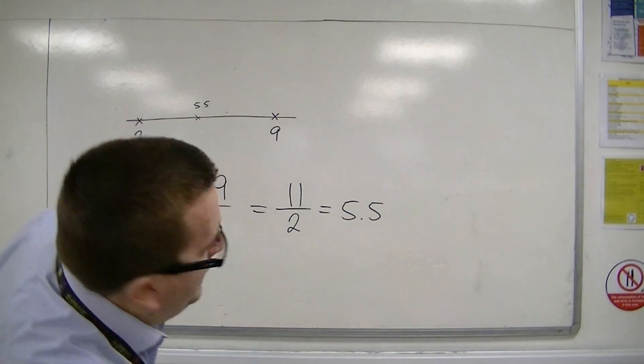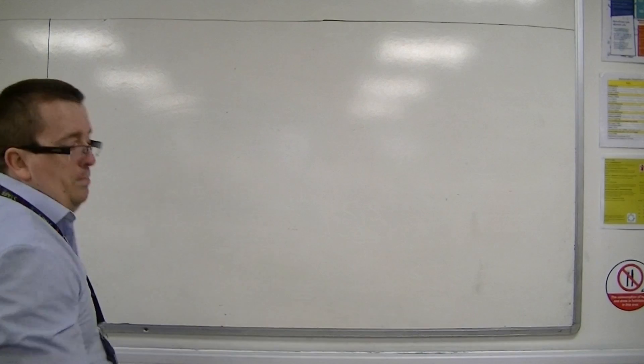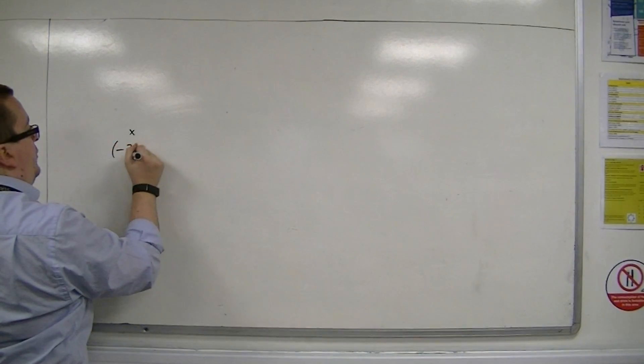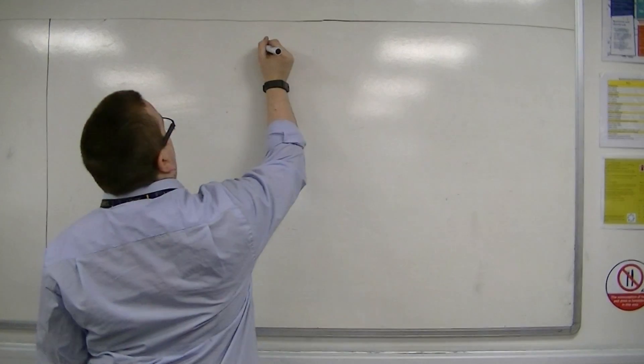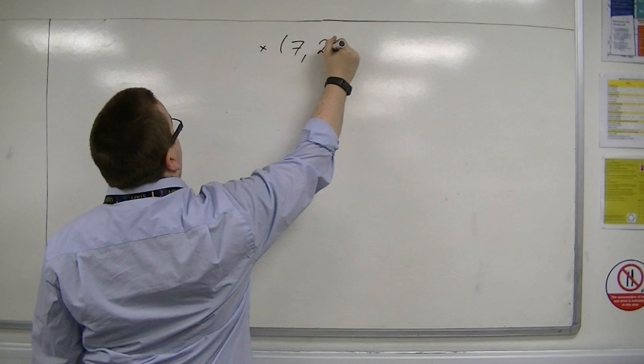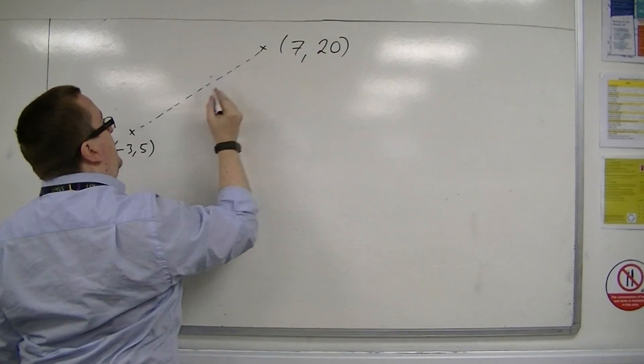So if we're then trying to find the coordinates that are the midpoint, let's say we've got minus 3, 5, and I've got another coordinate up here. Let's say it's 7, 20.